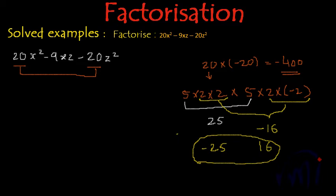So now let's rewrite this expression. This can be written as 20x square minus 25xz plus 16xz minus 20z square.